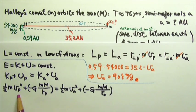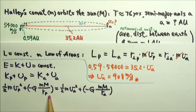So the one-half mv squared plus the negative G Mm over r, the gravitational potential energy, should equal at the closest and the farthest point.